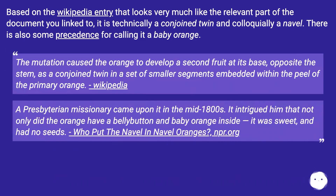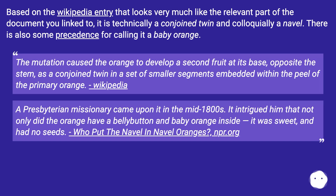Based on the Wikipedia entry that looks very much like the relevant part of the document you linked to, it is technically a conjoined twin and colloquially a navel. There is also some precedence for calling it a baby orange. The mutation caused the orange to develop a second fruit at its base, opposite the stem, as a conjoined twin in a set of smaller segments embedded within the peel of the primary orange.